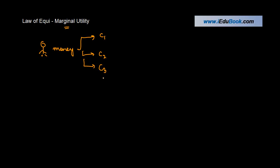C1, C2, C3. Unlike the case that we took in the previous video where the entire money was being spent on one particular good, in this case the money is being spent on multiple commodities.